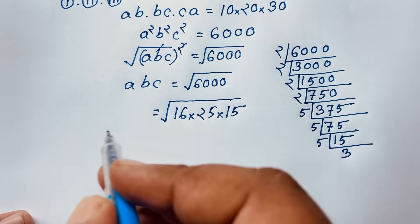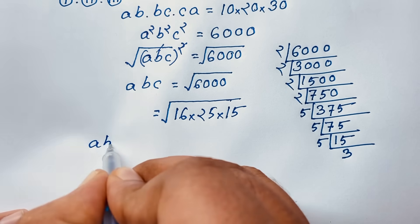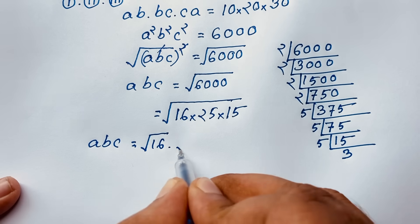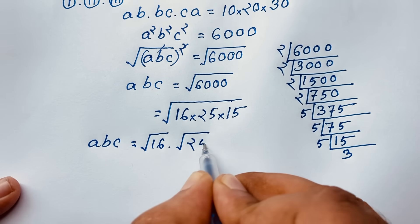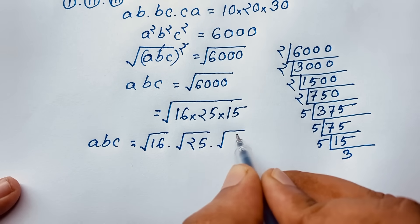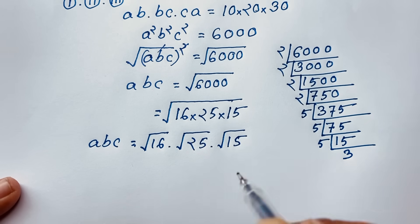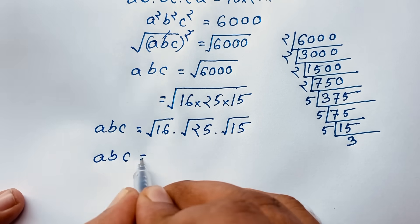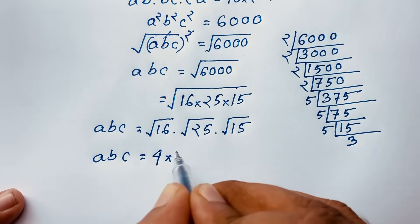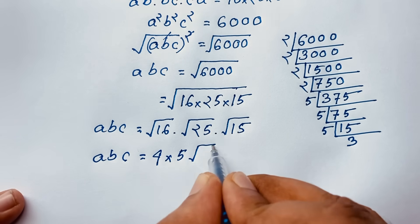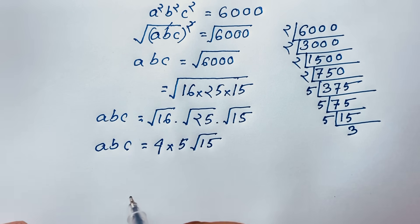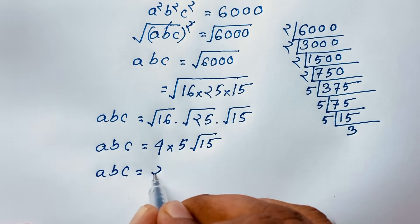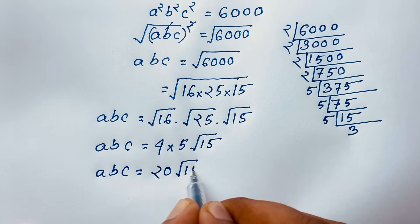So the square root of 6,000 equals square root of 16 times square root of 25 times square root of 15, which gives 4 times 5 times square root of 15. Therefore ABC is equal to 20 square root of 15.